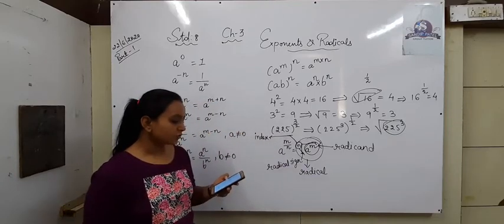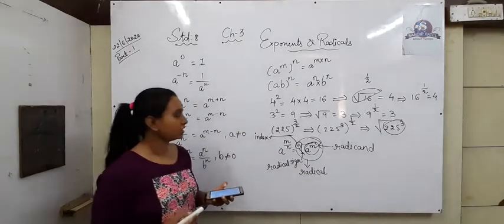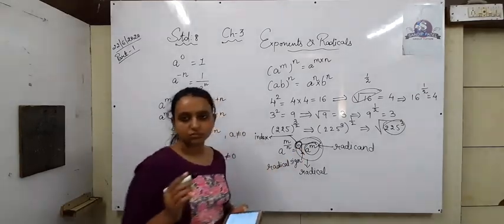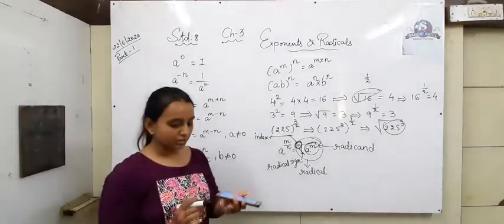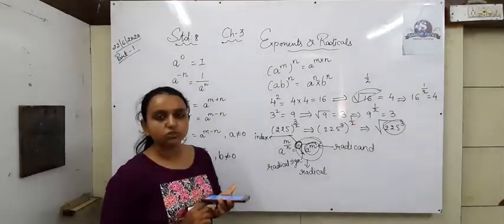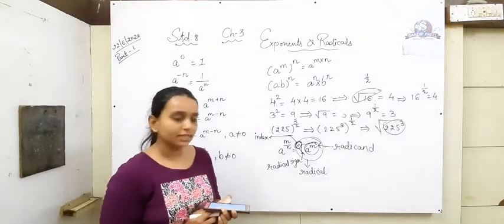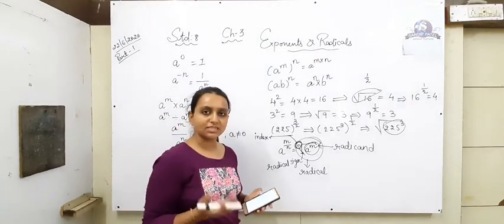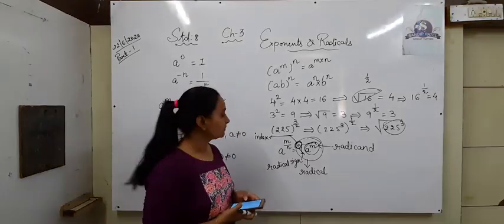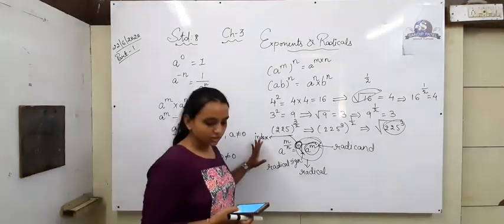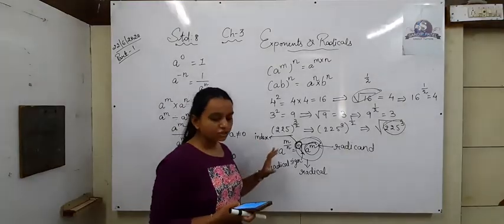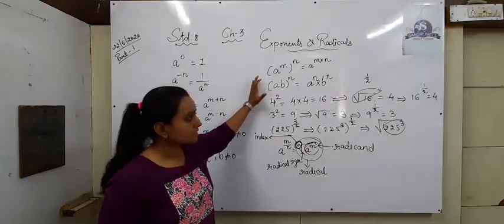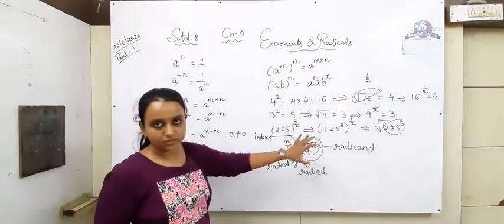The index of a radical is always a natural number, meaning the number outside is always a natural number. Natural number means either two, three, four — all positive numbers other than zero are called natural numbers. So the concept must be clear: in rational numbers as exponents, how can we express them, and after expressing, how do we solve them?